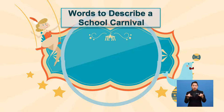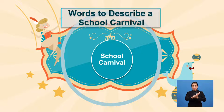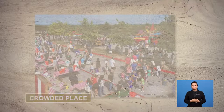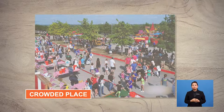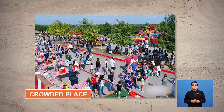Draw a circle map on your paper. I have one word: crowded. Let's look at the picture of a scene at a carnival.